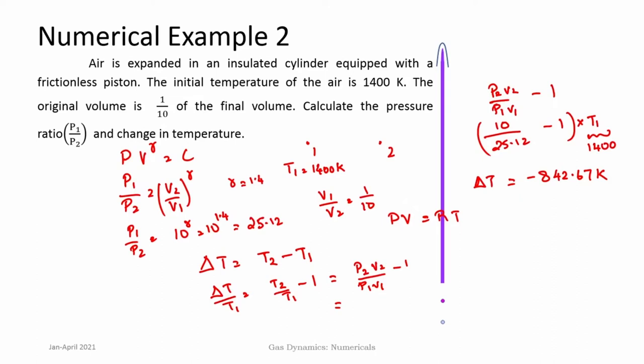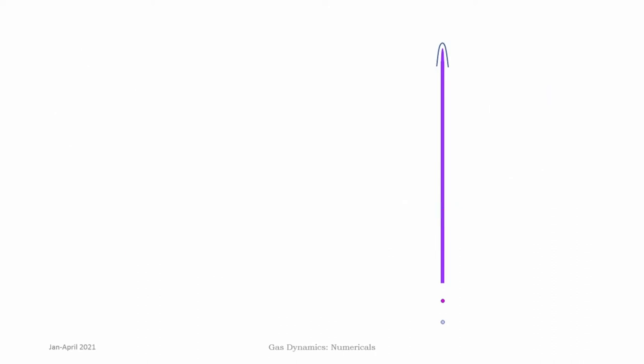The two important concepts used here are: first, that an adiabatic reversible process is isentropic — allowing us to calculate the pressure ratio given the volume ratios — and second, the ideal gas law to calculate the change in temperature. Now let us go to the third numerical example.